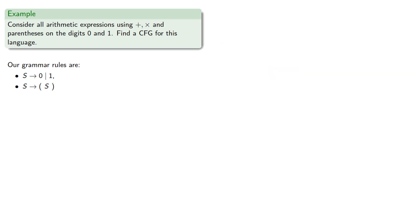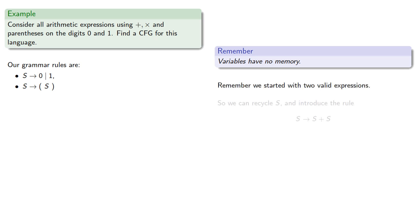We'll keep in mind, variables have no memory. Remember, we started with two valid expressions, so we can actually recycle S and introduce the rule S produces S plus S. By the same reasoning, S produces S times S, where there's no commitment that these S's are different.